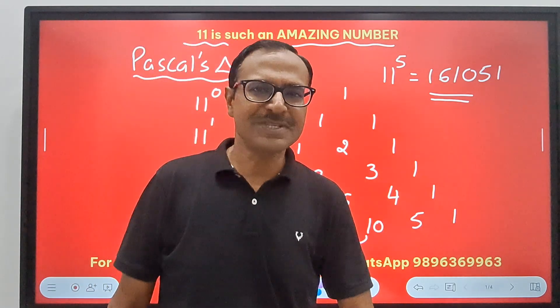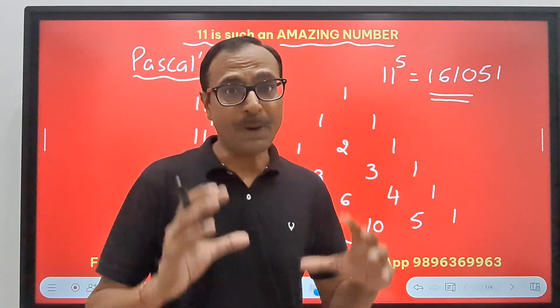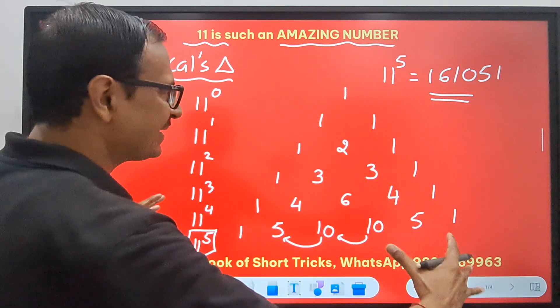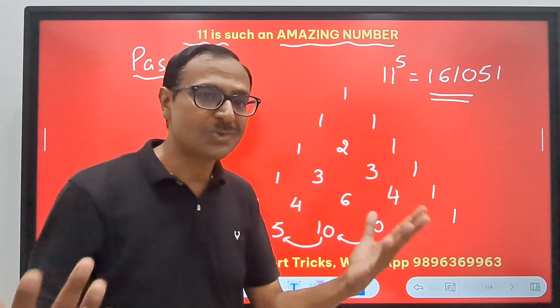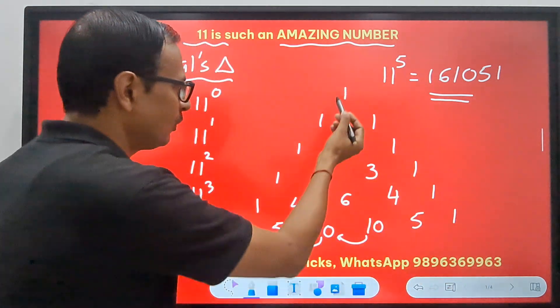That's the first important thing — the powers of 11 follow a pattern called Pascal's triangle. Beautiful.